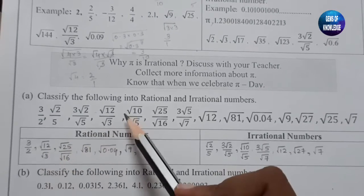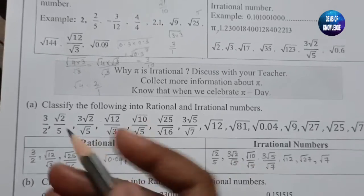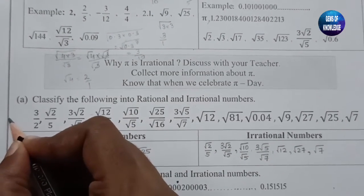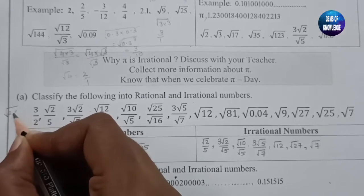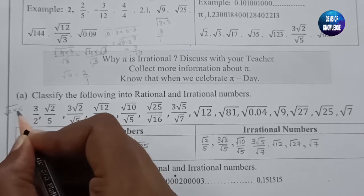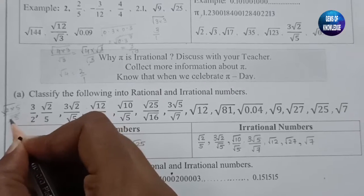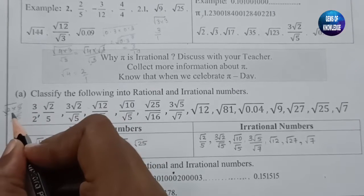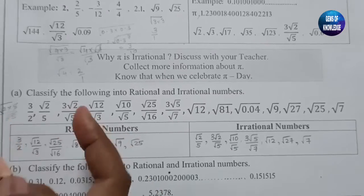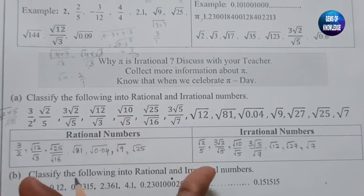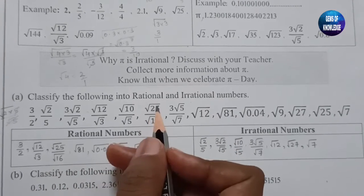Root 10 by root 5: root 10 can be written as root of (2 times 5), divided by root 5. The root 5 terms cancel, leaving root 2, which cannot be opened. So root 10 by root 5 is an irrational number.